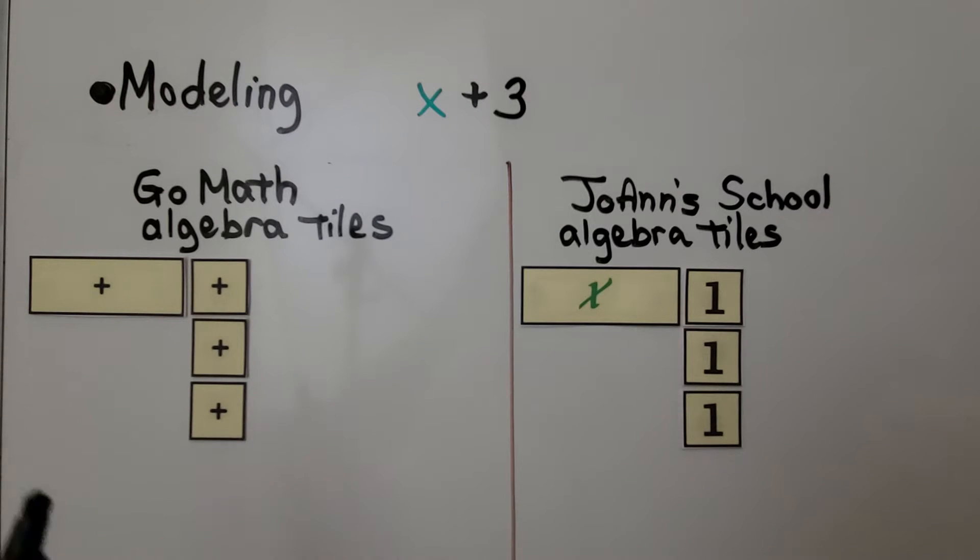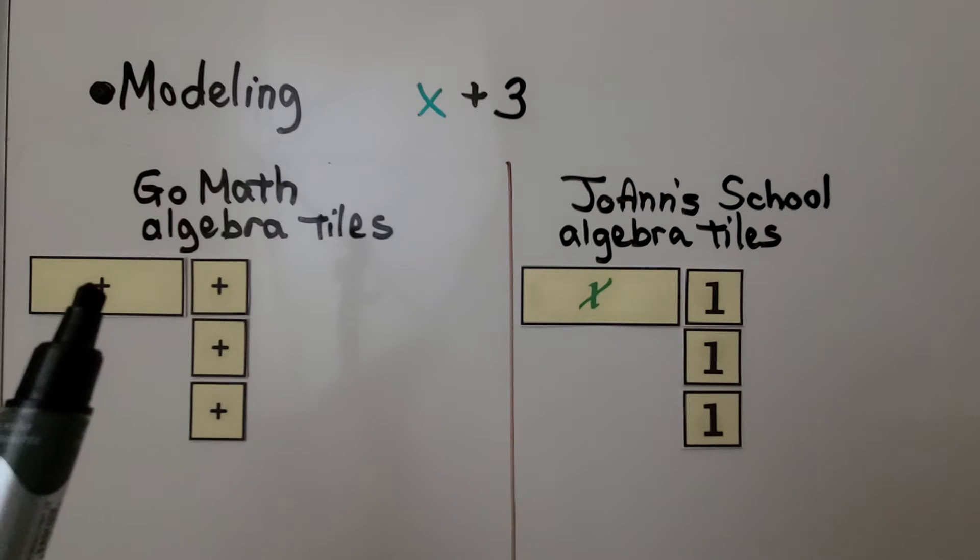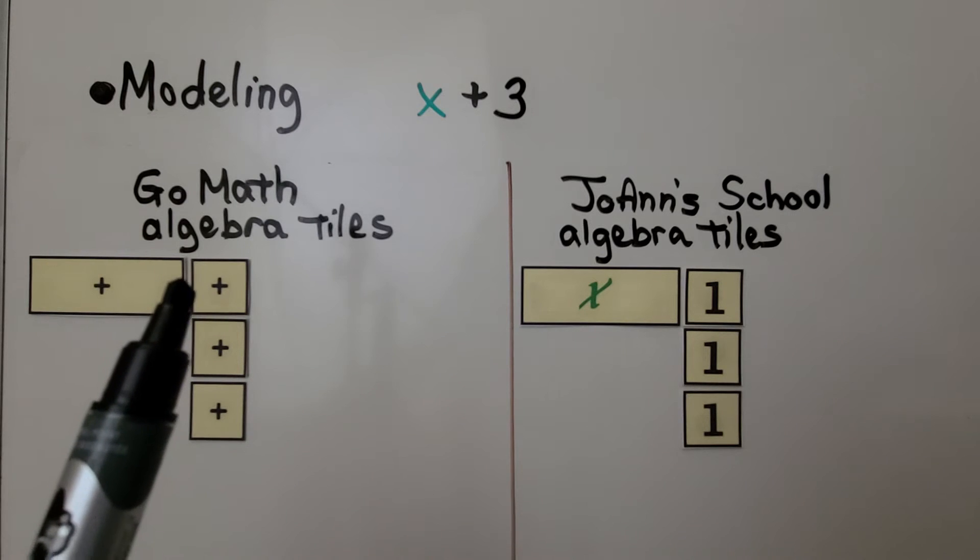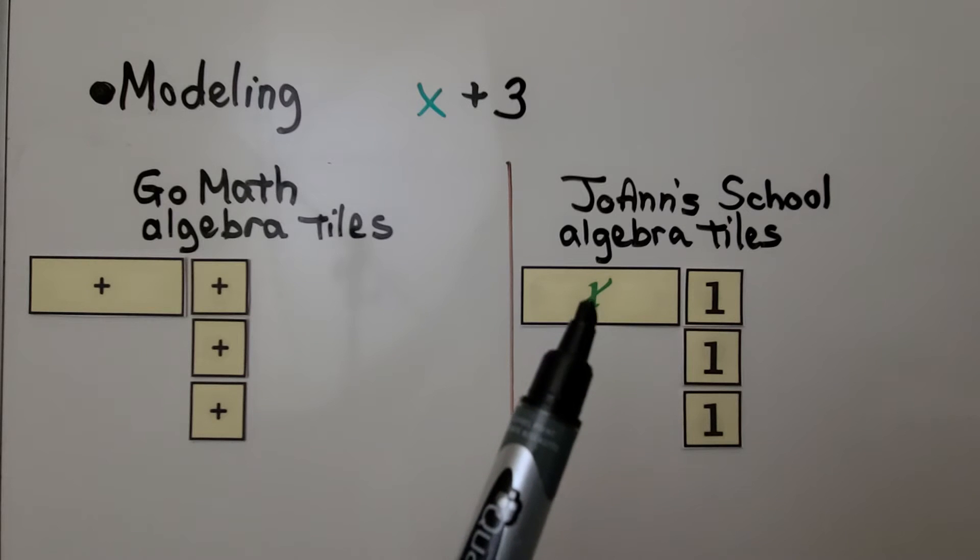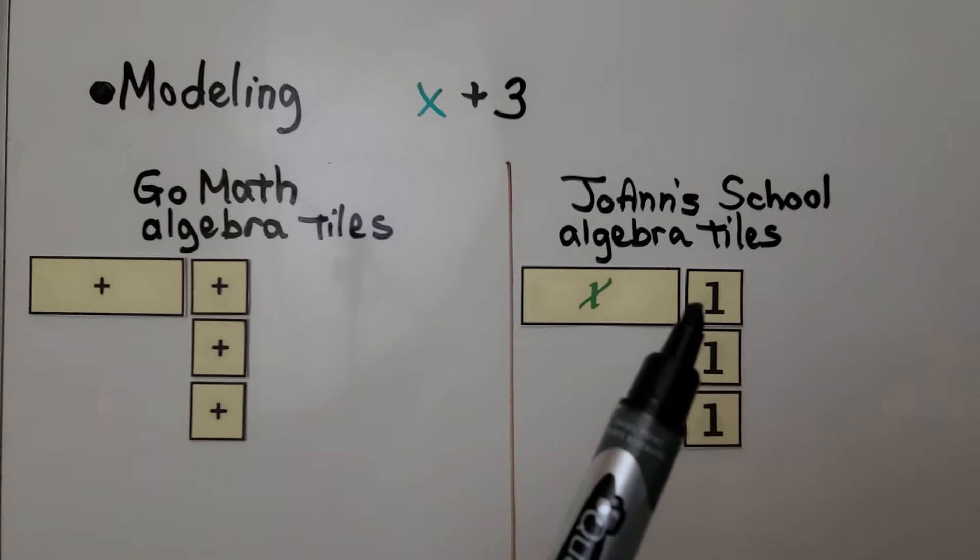The GoMath algebra tiles look like this, the rectangle with a plus and a square with a plus. My algebra tiles are actually going to put the variable x in the rectangle and a one in the square to help make it more understandable.